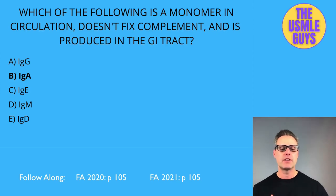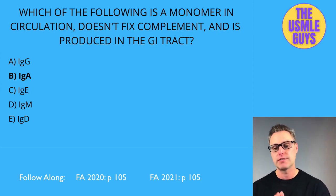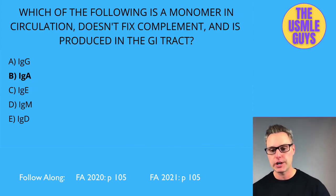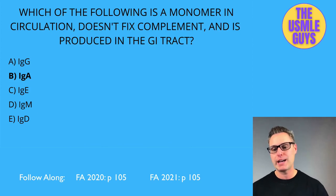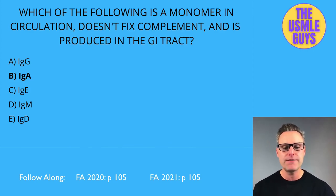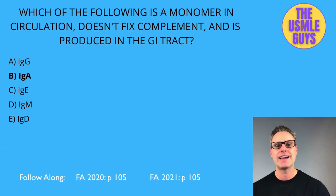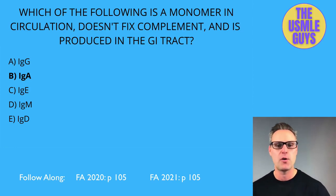Immunoglobulins can differentiate in the germinal centers of lymph nodes through isotype switching into IgA-, IgE-, or IgG-secreting plasma cells — induced by the CD40 ligand and a variety of cytokines. That concludes lecture number two. Check out lecture number three when you're ready to move forward with more questions.